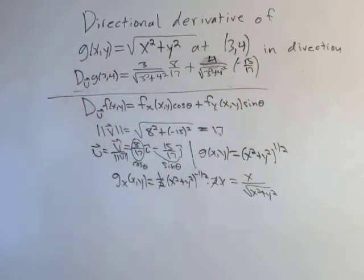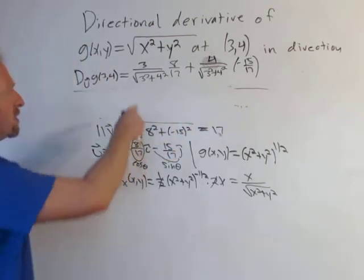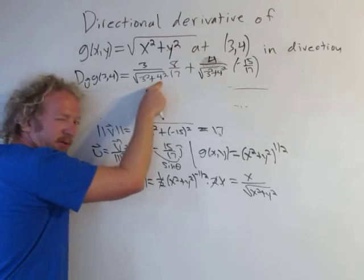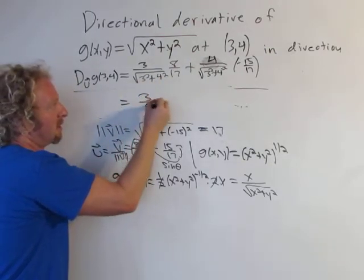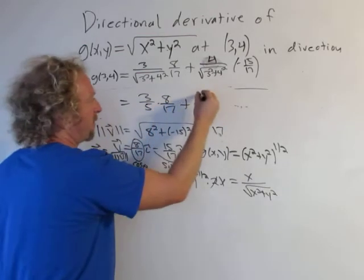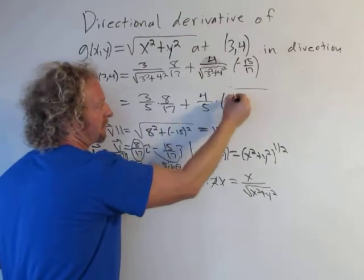And I think that's it. Now we just got to clean this up and we have the answer. Let's finish it up. So 9 plus 16 is 25. Square root of 25 is 5. This is 3 fifths times 8 over 17. Plus this is 4 fifths times negative 15 over 17.